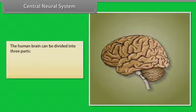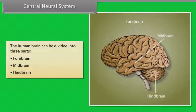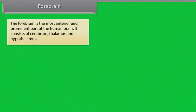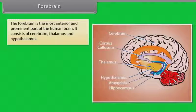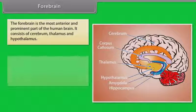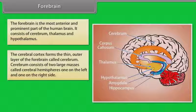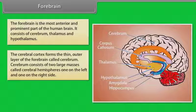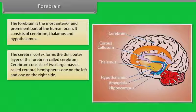The human brain can be divided into three parts: forebrain, midbrain and hindbrain. The forebrain is the most anterior and prominent part of the human brain. It consists of cerebrum, thalamus and hypothalamus. The cerebral cortex forms the thin outer layer of the forebrain called cerebrum. Cerebrum consists of two large masses called cerebral hemispheres, one on the left and one on the right side.